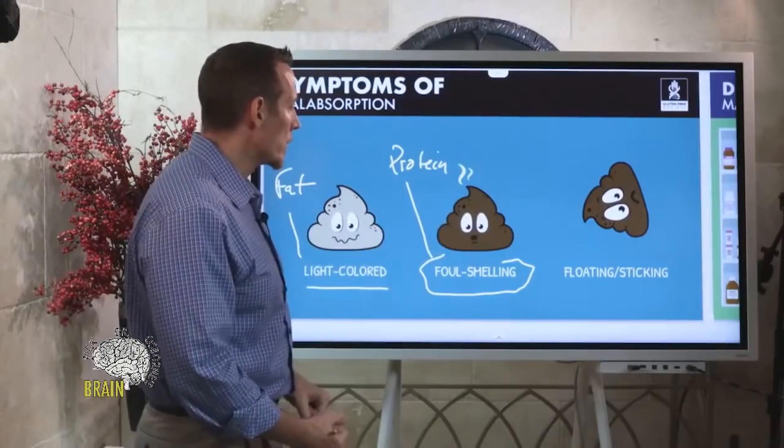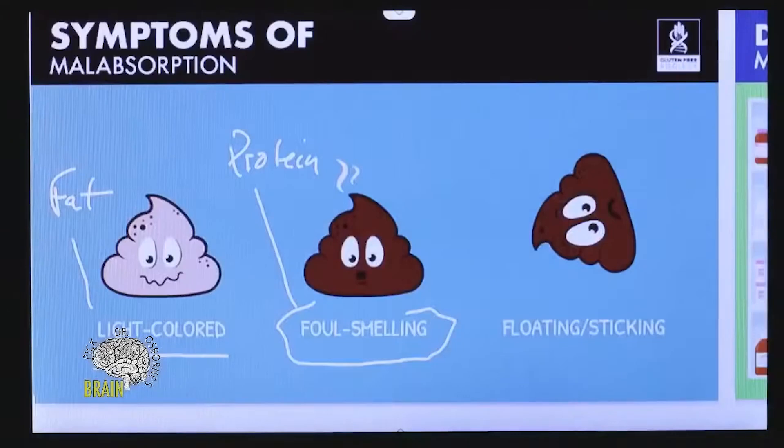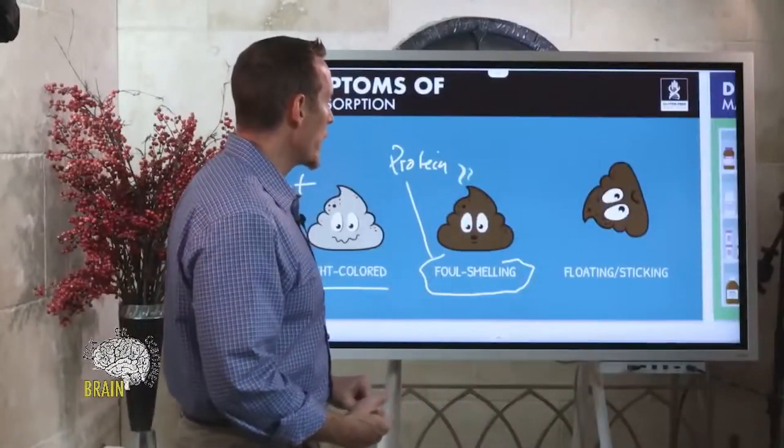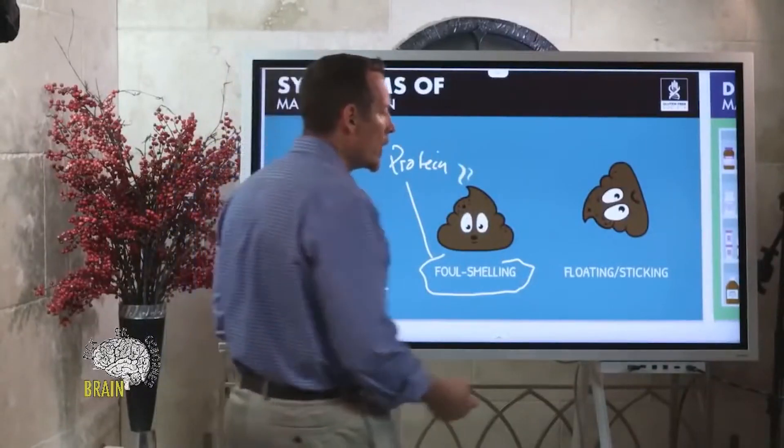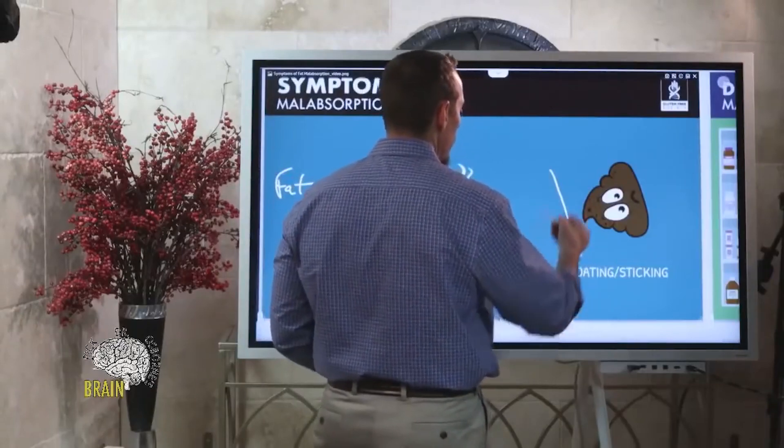If you go to the bathroom—and the stool is not supposed to smell wonderful and flowery—but there's a difference between how it smells and when it really, really smells quite foul. If that's you, you might consider that you're suffering with a protein malabsorption issue. Floating or sticking to the side of the toilet bowl can often be fat malabsorption as well.